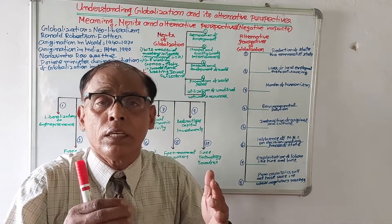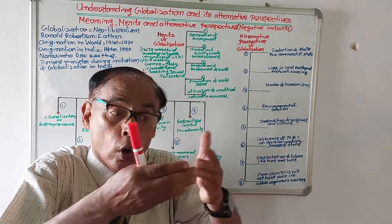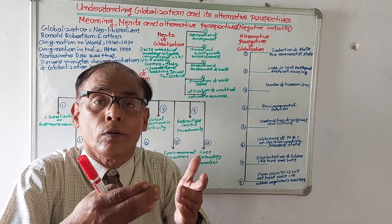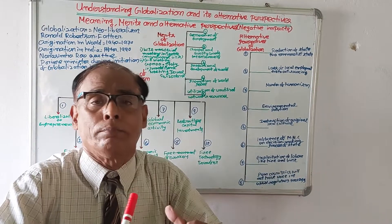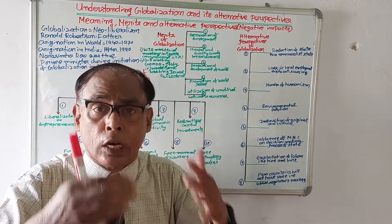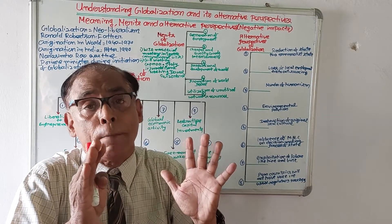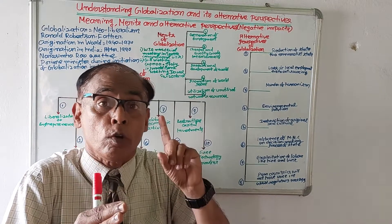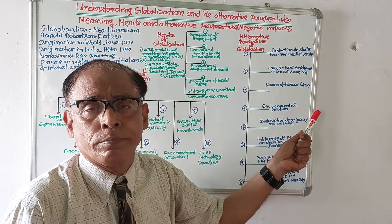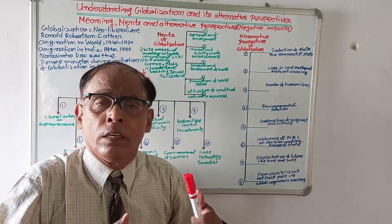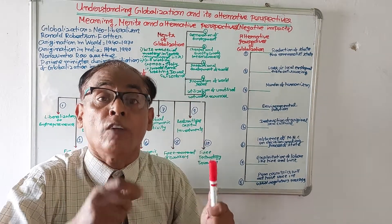Number two: loss of local employment due to outsourcing. In globalization there will be movement of workers to different places. So local people will lose employment because skilled workers from other areas will come to a definite place and local people will be unable to get employment. Number three: murder of humanism. In globalization, capitalists and businessmen will run after profit; they will not look after humanism — humanism will be murdered, profit will be primary and everything else secondary.